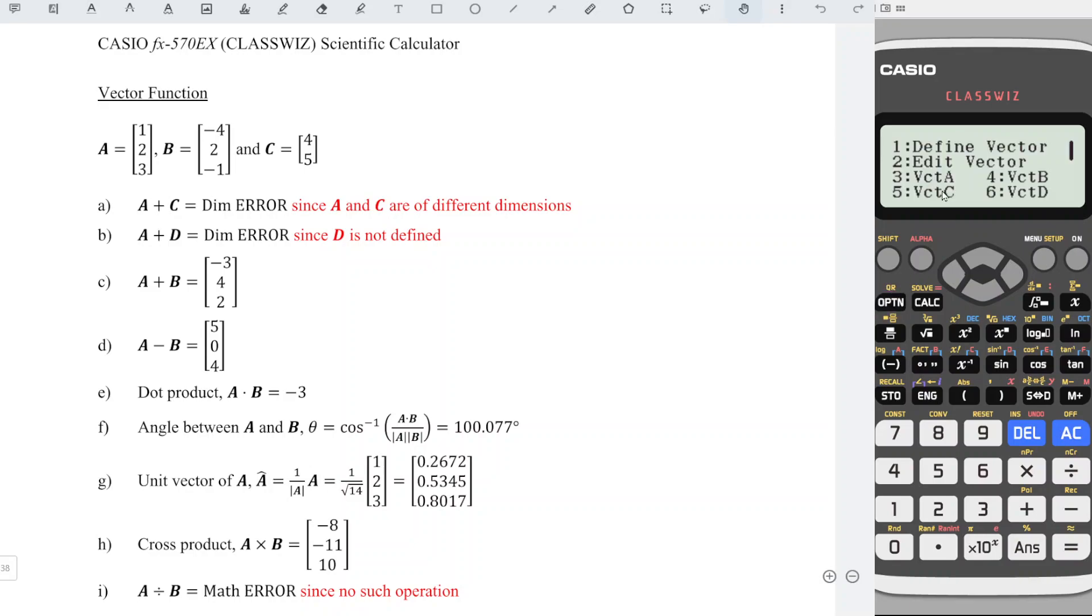Press Option, call vector A, plus Option, vector B, and we obtain the correct vector as we can see here. For subtraction, we have Option, vector A, minus Option, vector B. Press equal to get the answer.